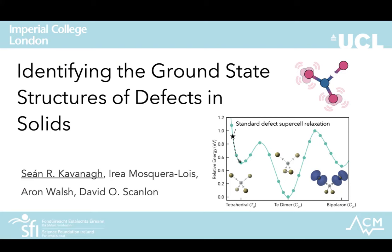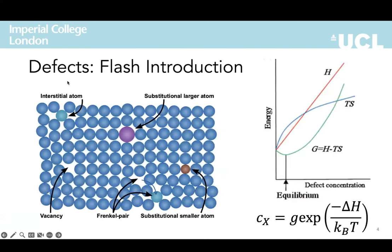We found that the standard modeling approach for defects used by many groups worldwide — what has become the conventional approach — is actually prone to missing the true ground state configurations of defects, and can give quite severe inaccuracies in many cases. When I say defects, we're particularly interested in point defects: atomic-level impurities present in essentially every bulk material.